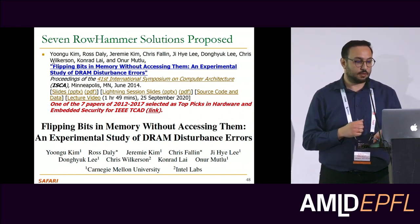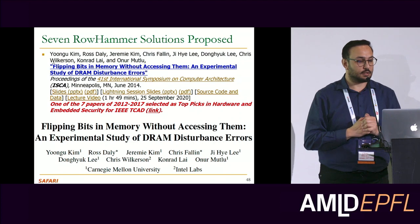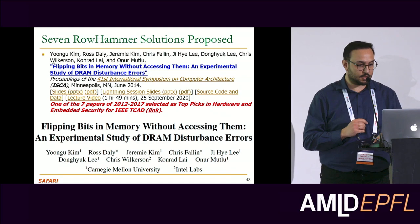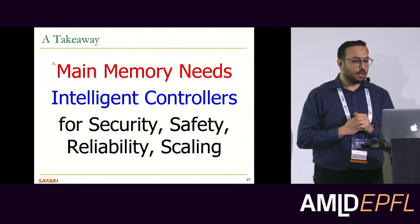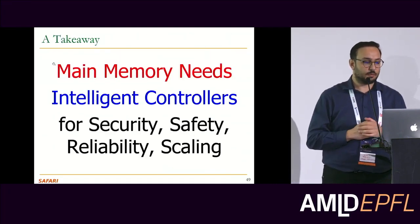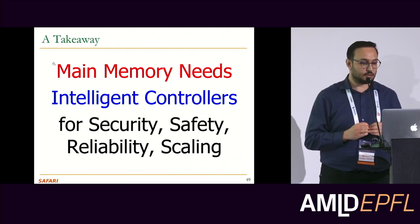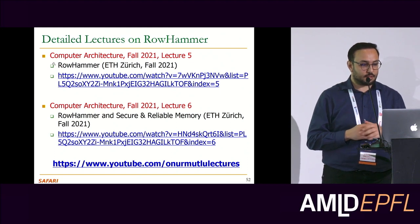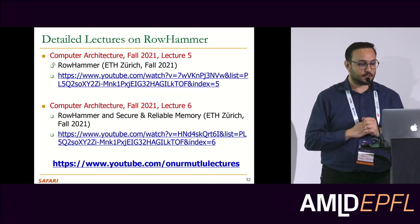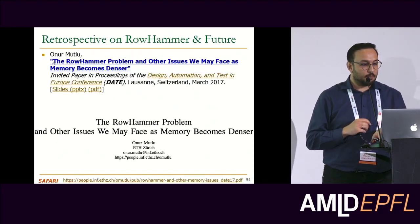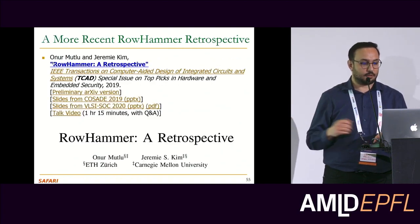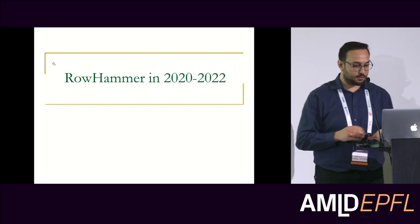PARA was the solution shared in our 2014 paper, and there are six other solutions in that paper as well. The takeaway from this paper is that main memory needs intelligent controllers for security, safety, reliability, and scaling. There are detailed lectures on these, and we also have more retrospective papers explaining the full historical story.